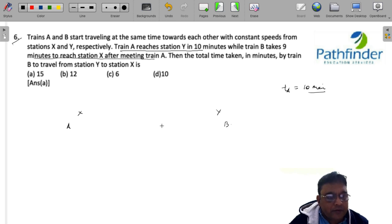If A starts from X and B starts from Y, let us say they meet somewhere here at Z. And the time taken by B to travel from Z to X is given as 9 minutes.